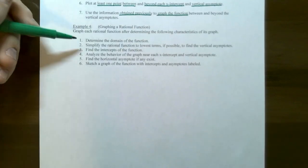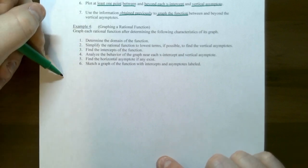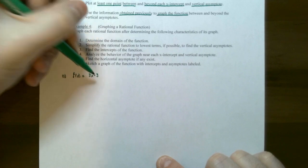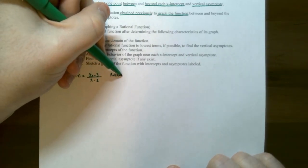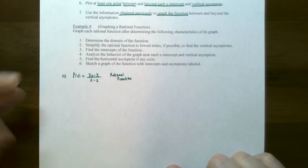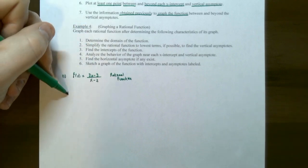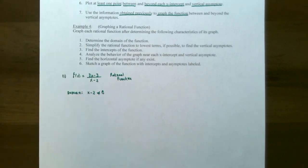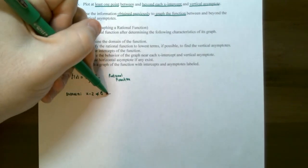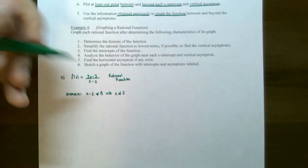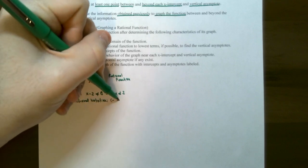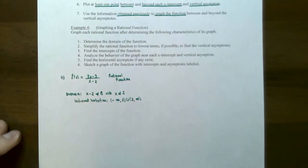Example four: graph f of x equals 3x subtract 3 divided by x minus 2. This is a rational function — a division of two different polynomials. The first step is to determine the domain. The domain is determined by taking the denominator and setting it as not equal to zero. Notice that x cannot equal 2, so the domain is negative infinity to 2, union 2 to infinity.